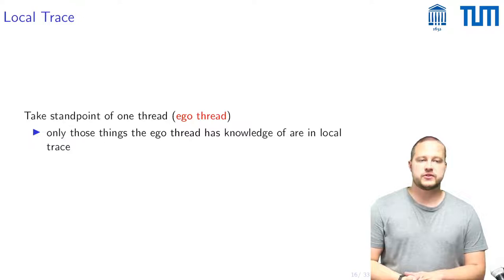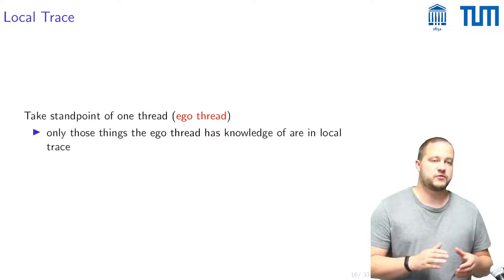Then contrast what is a local trace? Well for a local trace one would take the standpoint of one thread which we call the ego thread and only those things that the ego thread has knowledge of are actually in this local trace. So in some sense instead of having a bird's eye view of the system where one sees the local states of all threads one takes the perspective of only one of these threads.